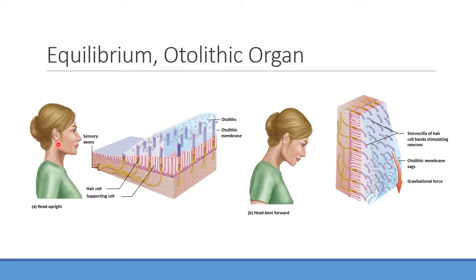Imagine a person tilting their head downward: the saccule activates as the otolith crystals pull the gel downward, bending the kinocilia and opening potassium channels. Because endolymph is very high in potassium, potassium flows into the cell and triggers an action potential. This contrasts with neurons, where sodium is the main ion causing depolarization. Potassium plays the same role in the cochlea as well, so perilymph and endolymph will come up again there.